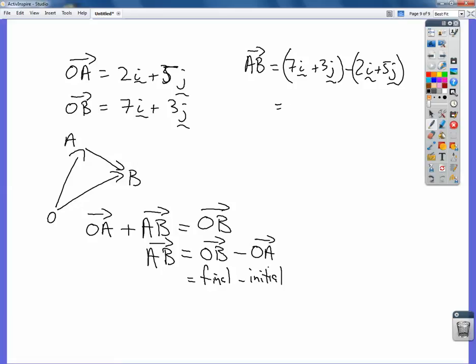Now when we subtract, the i minus the i, 7 minus 2 times i, and then the j minus the j, 3 minus 5j.